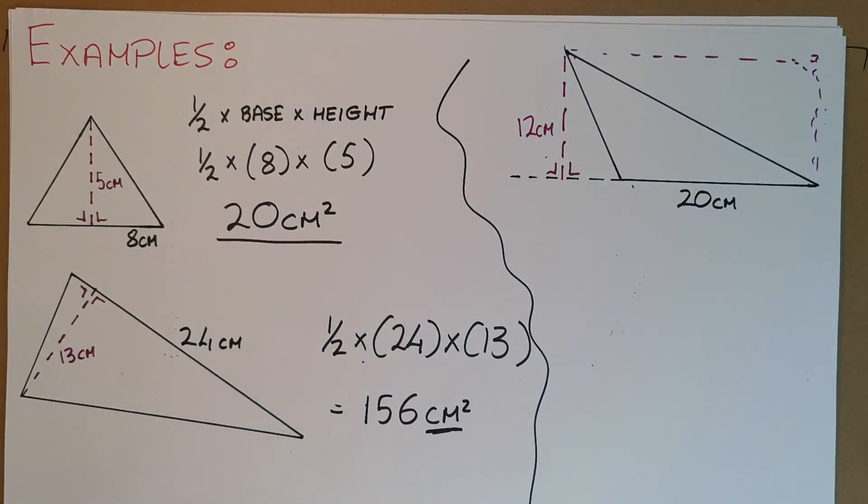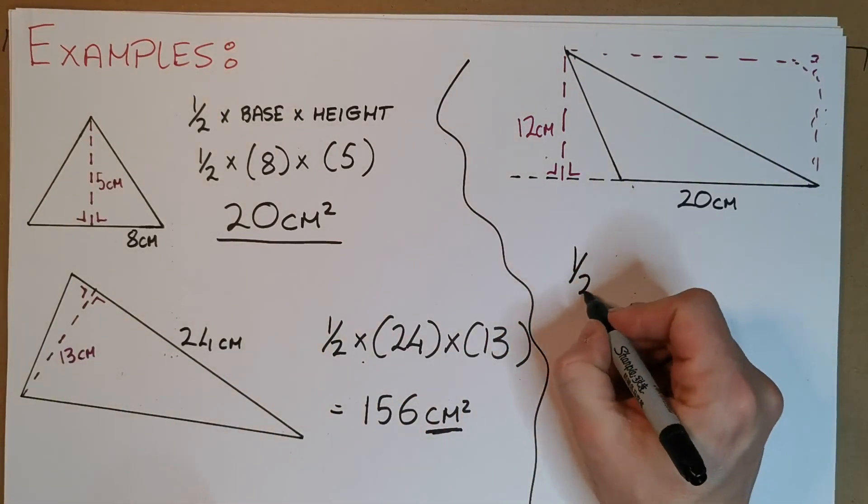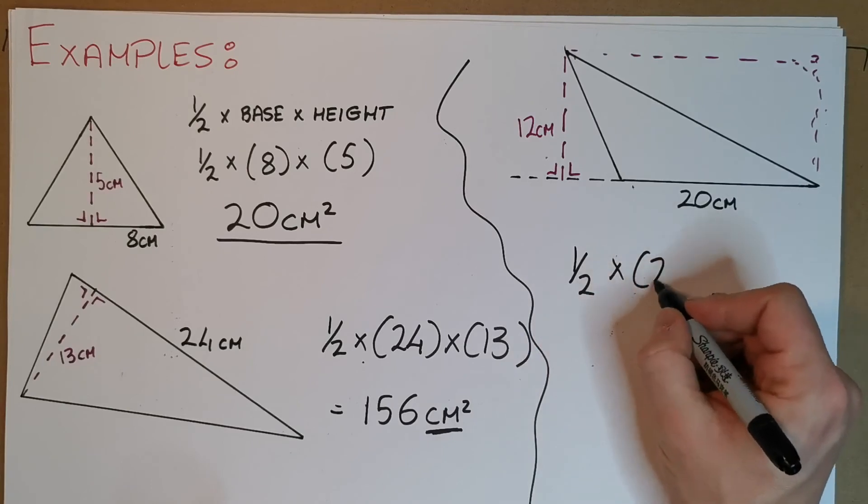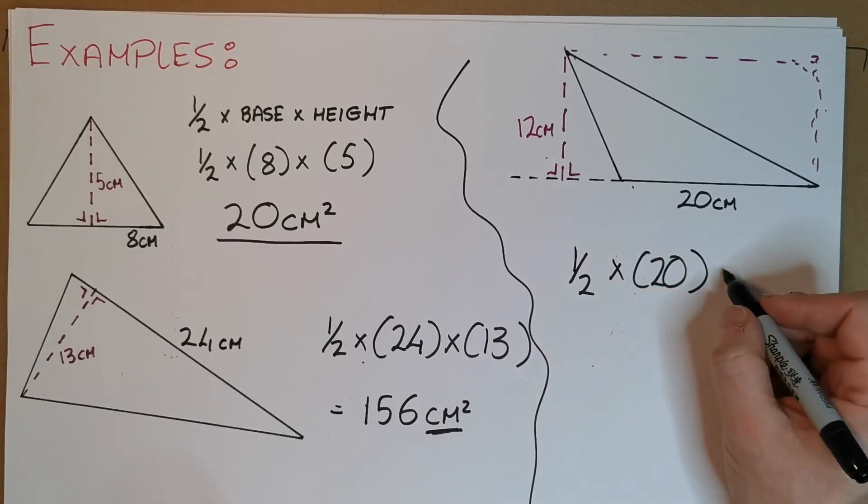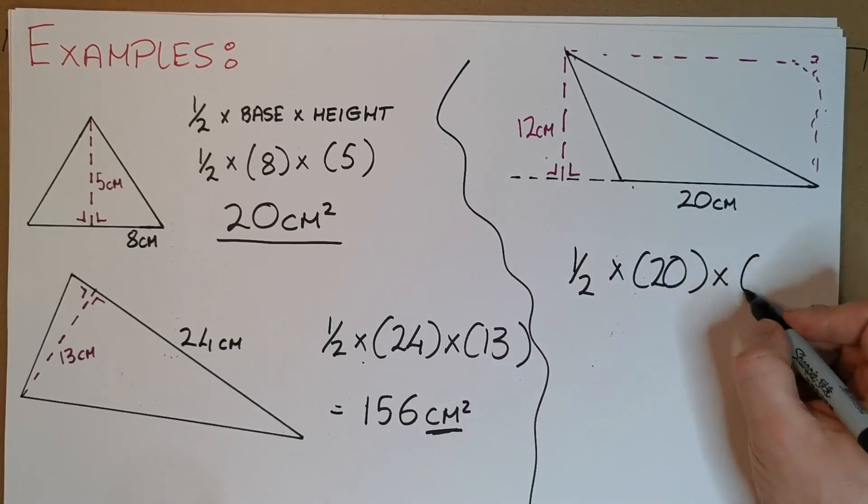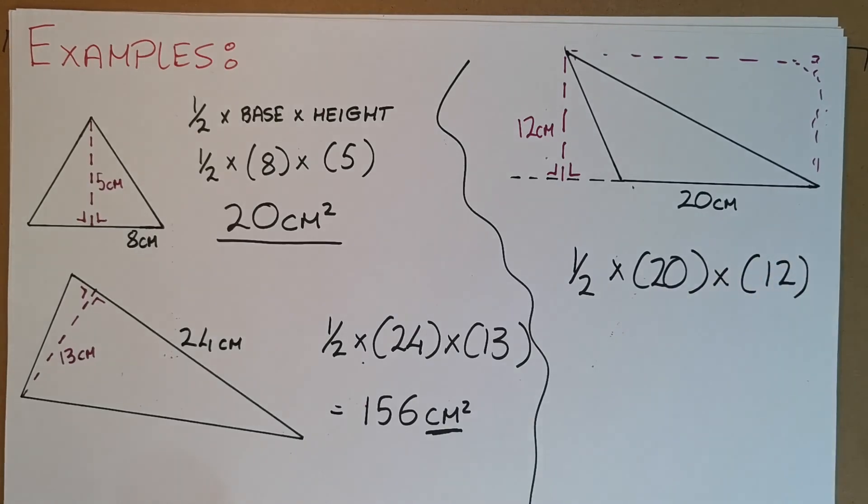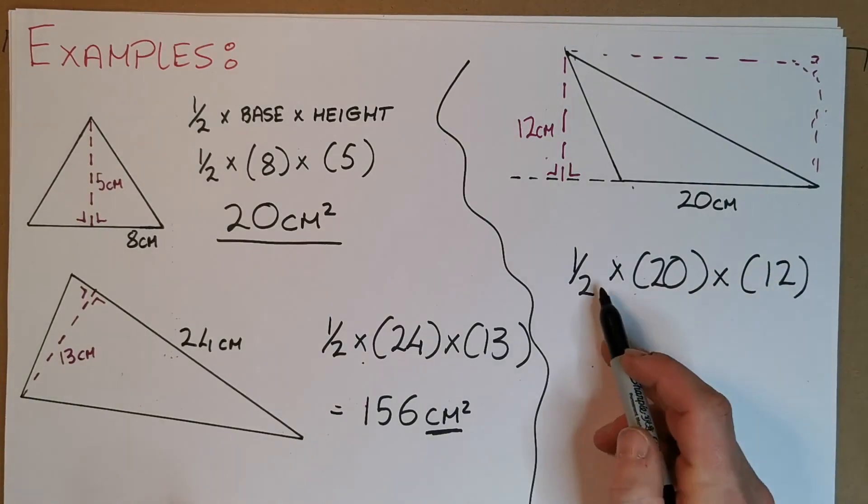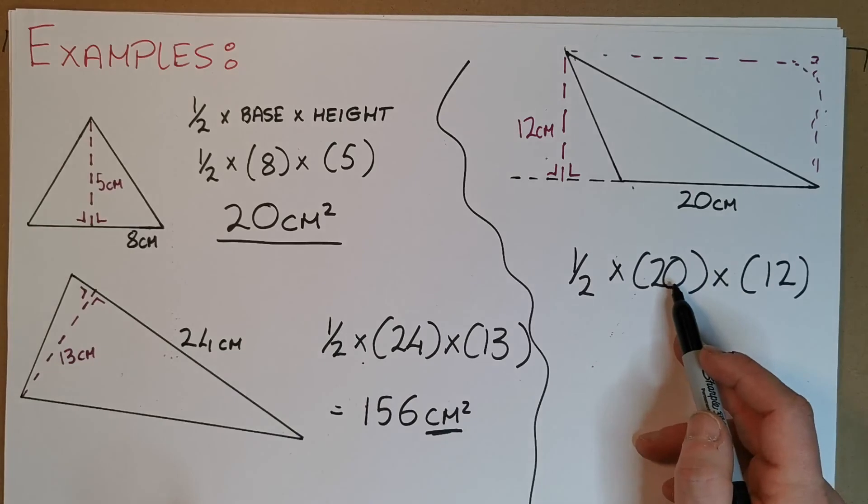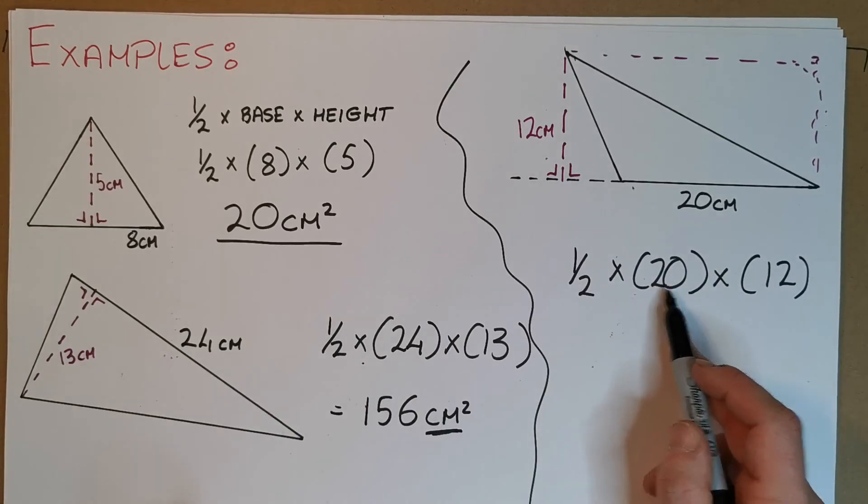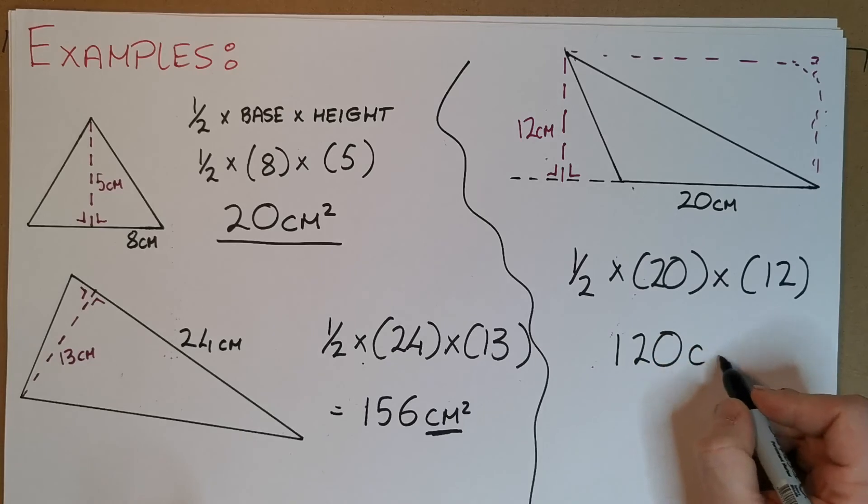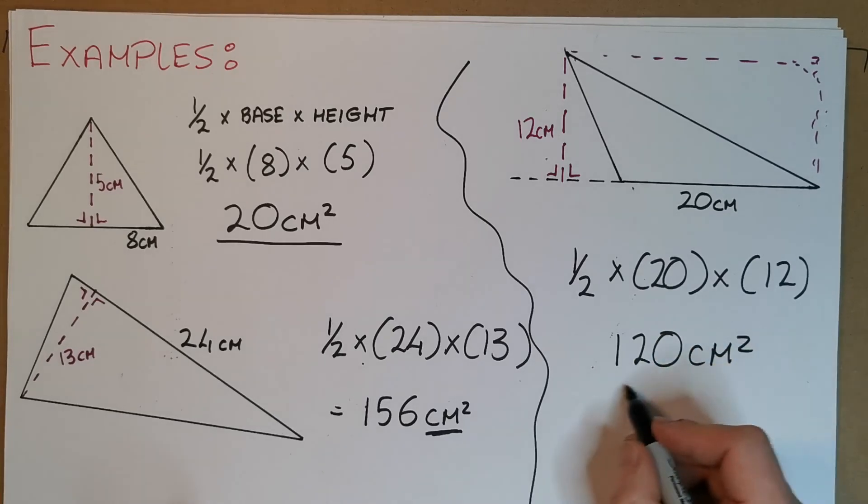It's the same process as the other two. It's still just going to be a half the base, which is 20, multiplied by the perpendicular height, which is 12. I'll tell you the way I do these: if I have a nice number like 20 here, a half of 20 is 10, 10 times 12 is 120, and of course centimeters squared.